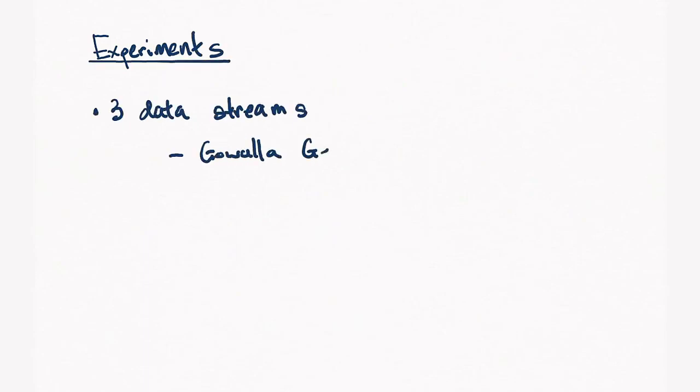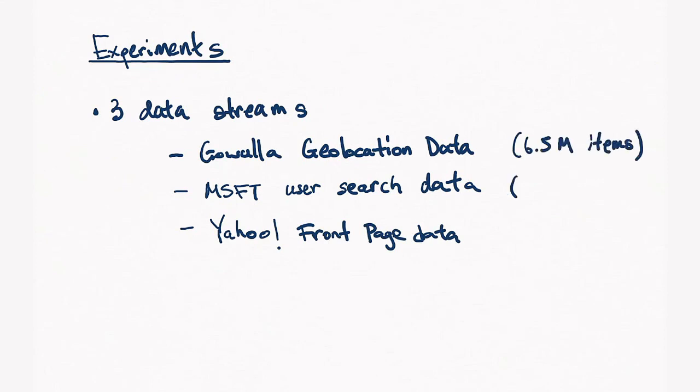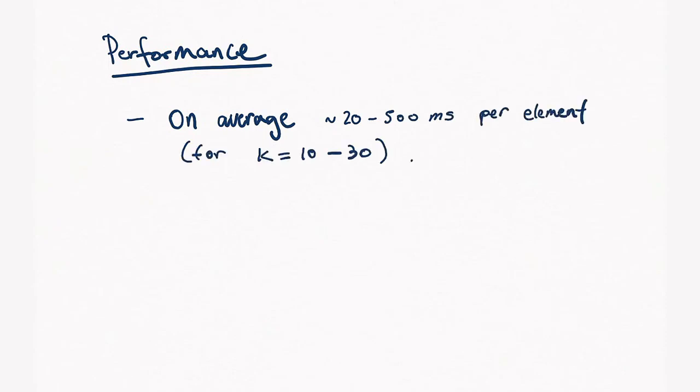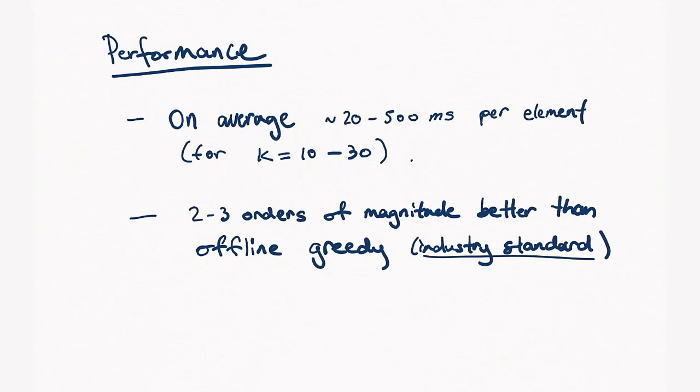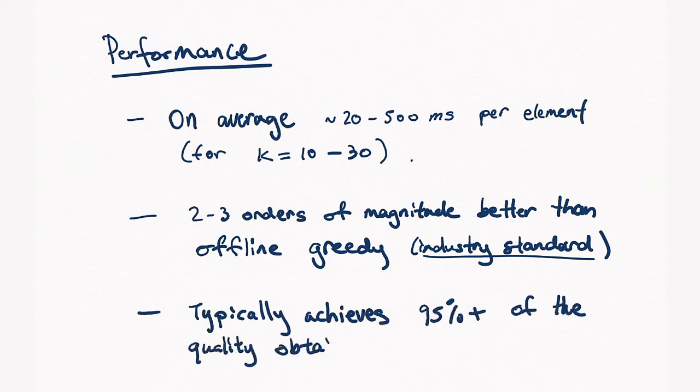So, finally, I want to end with some experiments. We experimented with three datasets: the Gowalla geolocation data, the Microsoft user search data, and the Yahoo front page data. Now, these streams were all quite large. The Gowalla had 6.5 million items, the Microsoft had 2 million items, and the Yahoo front page data had 27.5 million items. Now, in terms of performance, we implemented a simple version of the algorithm without much optimization. However, despite that, we were able to get quite decent performance. On average, any query took about 20 to 500 milliseconds, depending on the value of K we're trying to choose, usually 10 to 30. Compared to offline greedy, this is two to three orders of magnitude faster. And we know that offline greedy is typically the industry standard to optimize these sorts of functions. In terms of solution quality, we typically achieve about 95% of what is achieved by offline greedy.